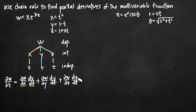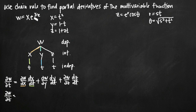Now we just need to find each of these values and plug them into our formula. The partial derivative of w with respect to t will be equal to the partial derivative of w with respect to x. If we look at this function, we're holding y and z constant, so e to the y over z acts as a constant coefficient on this first degree x variable. So our partial derivative there is e to the y over z, and we multiply that by dx/dt, which is the derivative of our x equation with respect to t — that's just 2t.